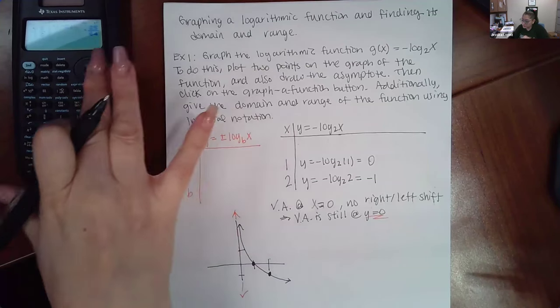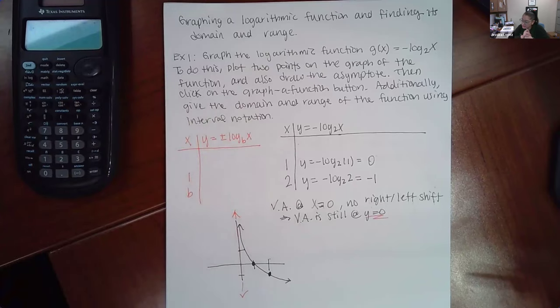Here in this topic, we are doing graphing a logarithmic function and finding its domain and range. So the direction states to graph the logarithmic function g of x equals negative log base 2 of x.